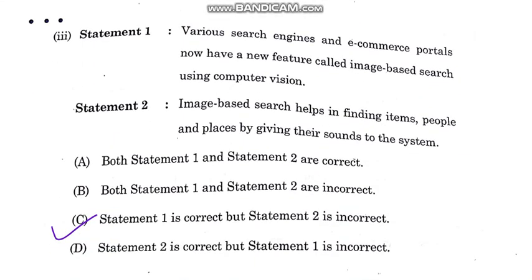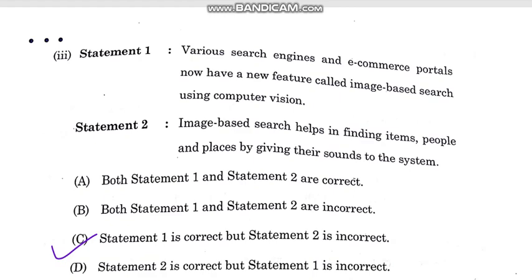Statement 1: Various search engines and e-commerce portals now have a new feature — image-based search — using computer vision. This statement is correct. However, the reason given — that image-based search helps find items, people, and places by giving sound to the system — is false. So C option is correct.